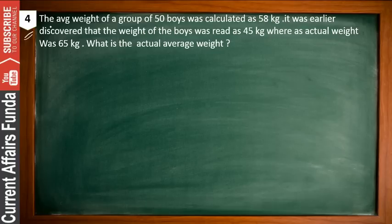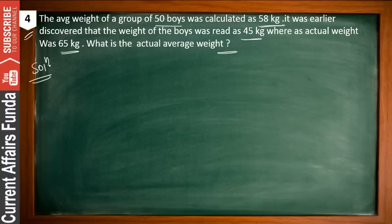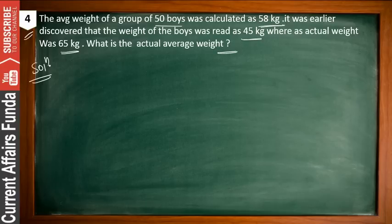Problem number 4: the average weight of a group of 50 boys was calculated as 58 kg. It was later discovered that the weight of one boy was read as 45 kg, whereas the actual weight was 65 kg. What is the actual average weight? This problem is very similar to the previous one.